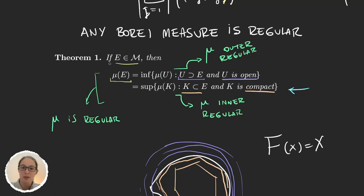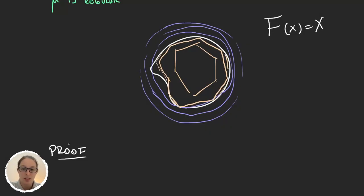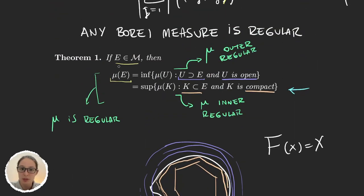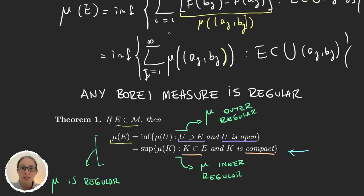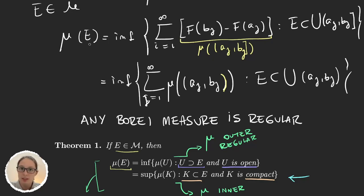In our last video we saw this very important theorem that Borel measures satisfied. Now let's actually prove it. I will first prove that mu of E in the sigma algebra M can be written as the infimum of the measures of open sets that cover our set. We learned in the last video that we could write the measure of E as the infimum of the sum of the measures of open intervals (a_j, b_j). So we will prove the theorem using this definition of the measure.